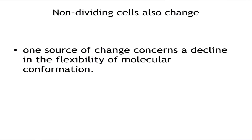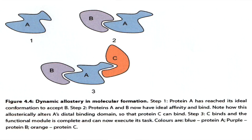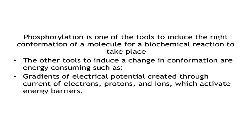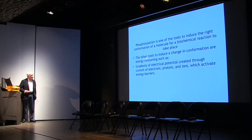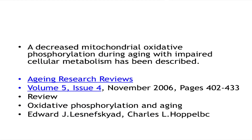Non-dividing cells also change. One source of change concerns a decline in the flexibility of molecular conformation. Molecules must assume a conformation for binding with other molecules to accomplish a biochemical reaction. Phosphorylation is one of the tools to induce the right conformation; other tools are energy-consuming, such as gradients of electric potential created through current of electrons, protons, and ions, which activate energy barriers. A decreased mitochondrial oxidative phosphorylation during aging with impaired cellular metabolism has been described.